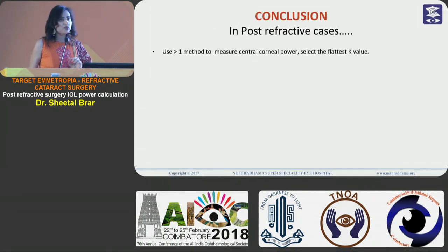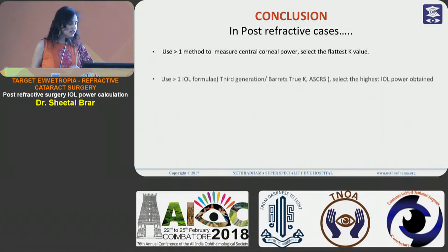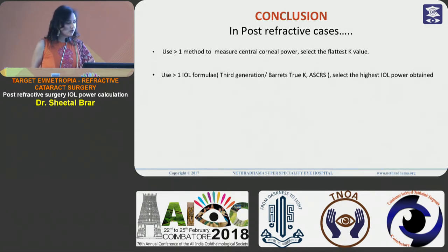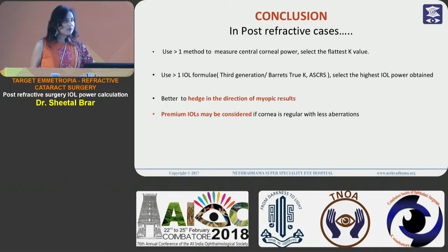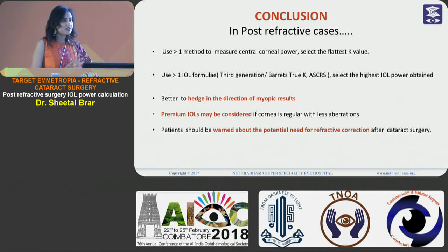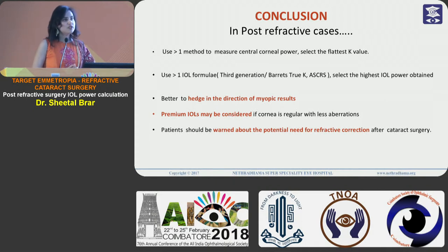To conclude: in post-refractive cases, always use more than one method to measure the central corneal power and select the flattest K value. Use more than one IOL formula and select the highest IOL power obtained. It is better to err in the direction of myopic results rather than hyperopia, and premium IOLs may be considered if the cornea is regular with less aberrations. However, patients should still be warned that despite all these considerations, they may have a residual refractive error which may need correction after cataract surgery.